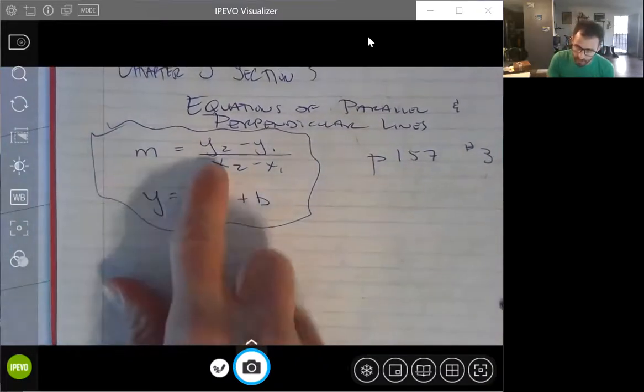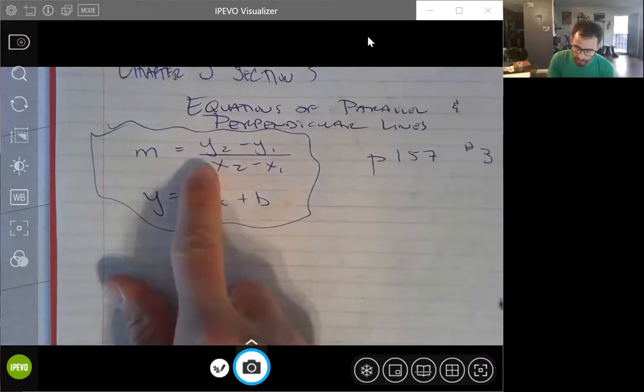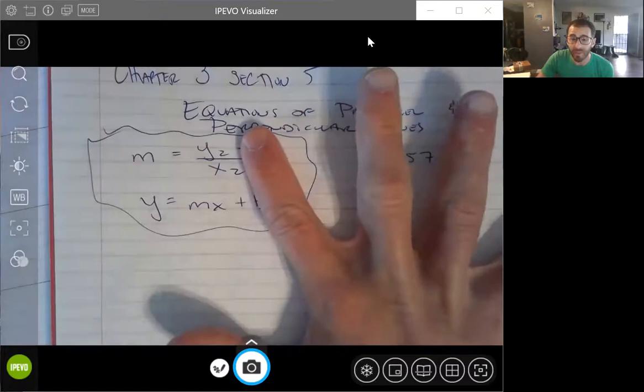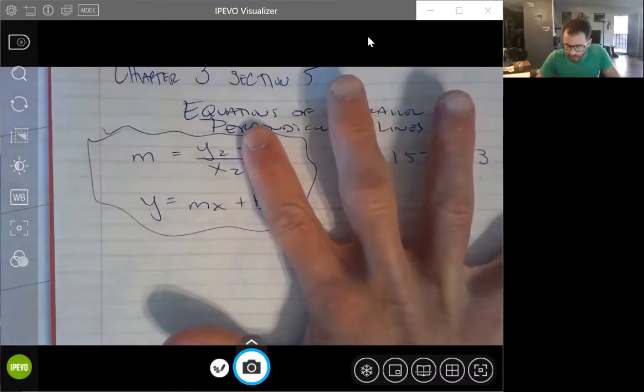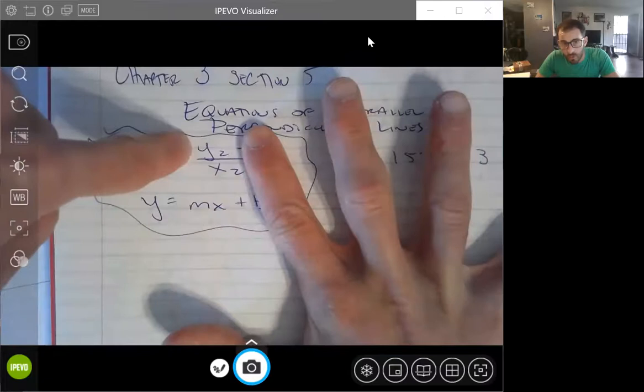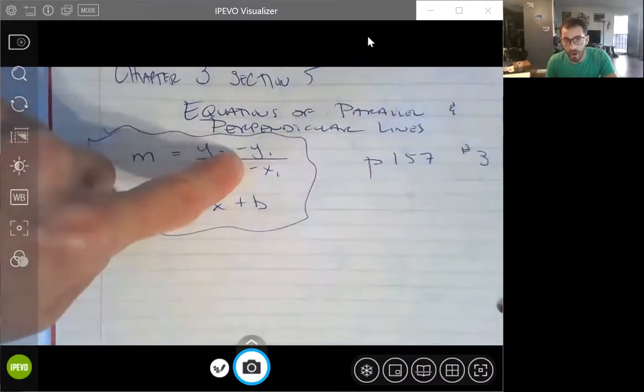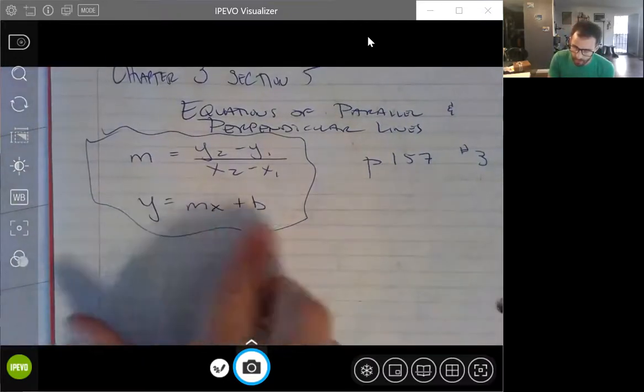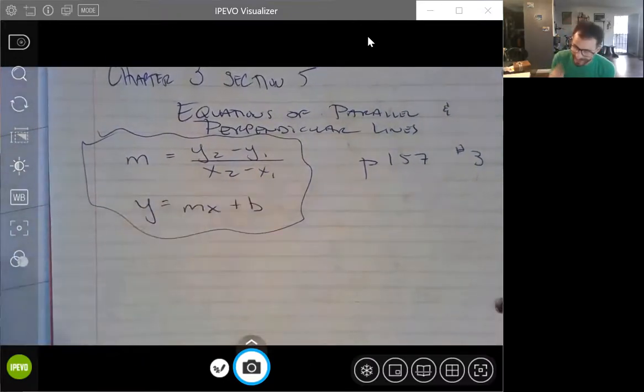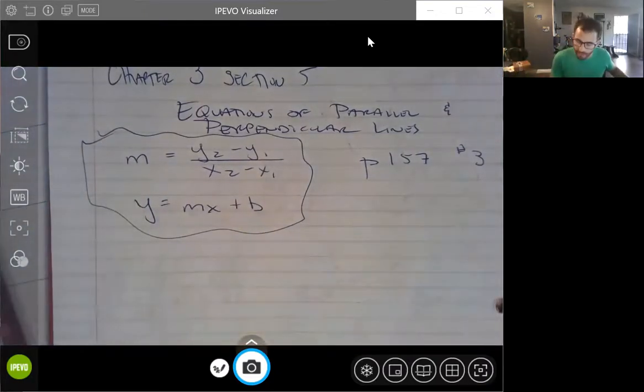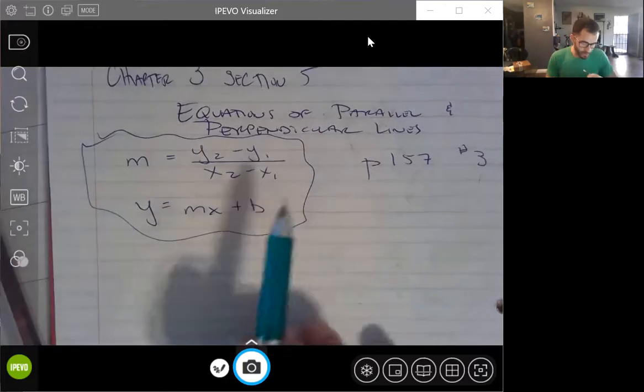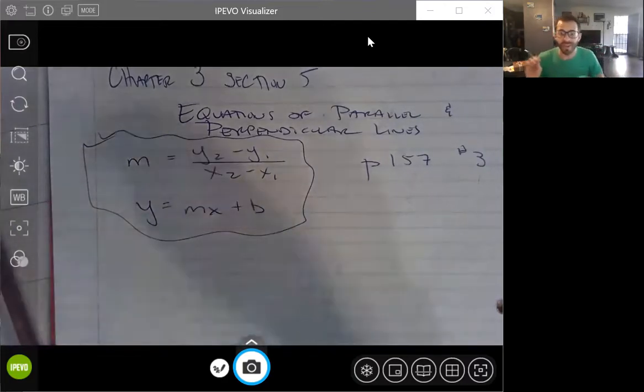Remember that a slope is just y2 minus y1 over x2 minus x1, rise over run. It's important. It doesn't matter what point you pick to go first or second, but that you line up the x underneath its y, the x underneath its y. Don't crisscross applesauce. And then finally, of course, equations of lines in slope-intercept form, which is the nicest way to read it, in my opinion, is y equals mx plus b, m being your slope, b being your y-intercept. But we are going to save the equation part for the next video.